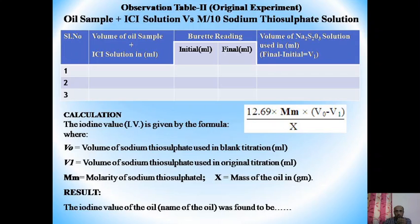After titration, the iodine value is calculated by the following formula: Iodine Value = 12.69 × mM × (V0 − V1) / X, where V0 is the volume of sodium thiosulphate used in the blank titration (without sample), V1 is the volume used in the original titration (with sample), mM is the molarity of sodium thiosulphate which is M/10 = 0.1, and X is the mass of oil in grams taken for titration.